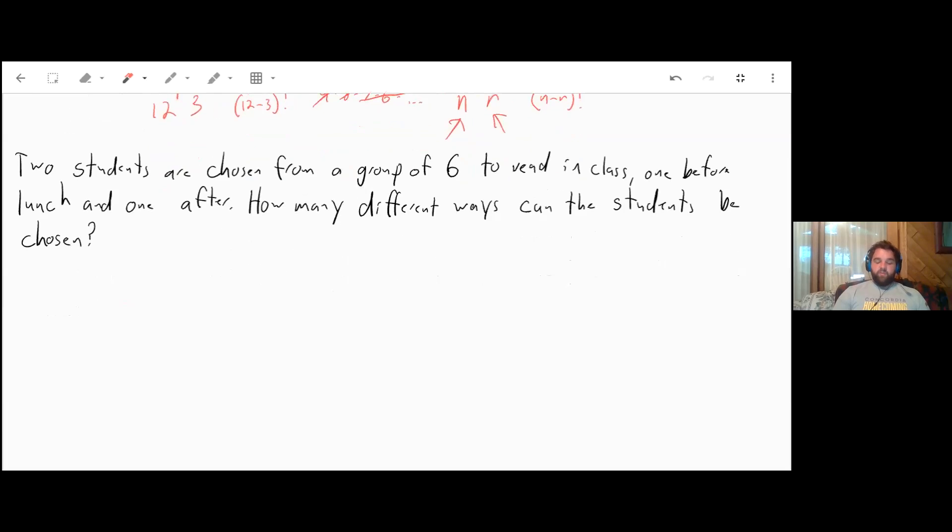So two students are chosen from a group of six to read in class, one before lunch and one after. How many different ways can the students be chosen? Well, we have a total of six students, and we're choosing two of them. And the order will matter because before lunch is different than after lunch. So this is going to be 6 factorial over 4 factorial, or in other words, 6 times 5 times 4 times 3 times 2 times 1 over 4 times 3 times 2 times 1. Well, we can cancel out the stuff that's the same on the top as on the bottom. And what's left is 6 times 5, which is 30. So that's how you can use permutations.